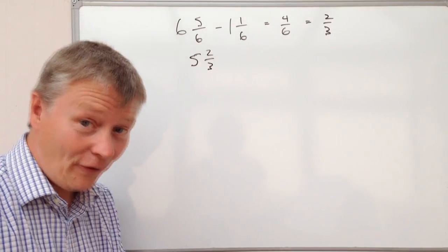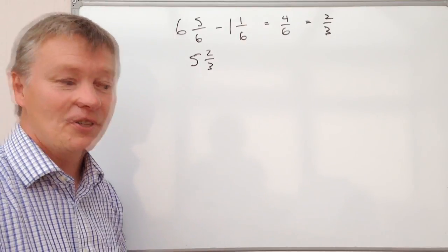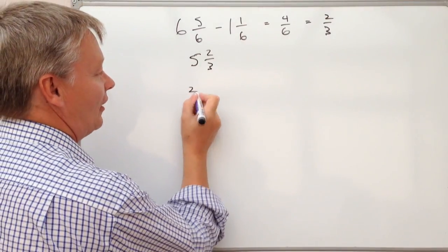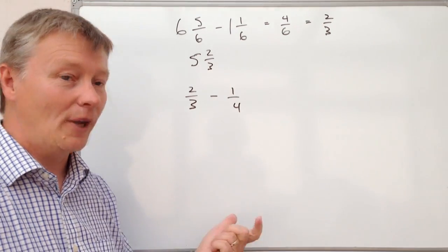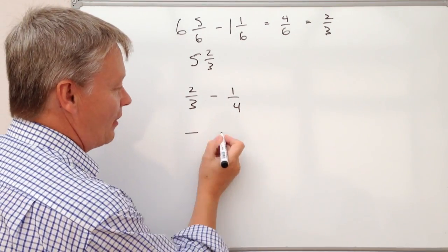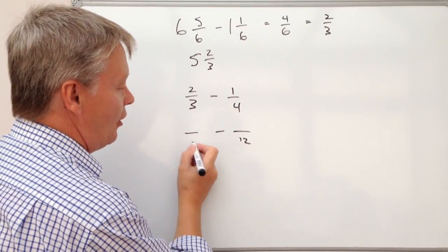If the denominators are different, then we need to make them the same. So let's have a look at a question like this. So we've got 2/3 minus 1/4. The way I'm going to make them the same is I'm going to make them both over 12.